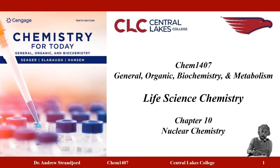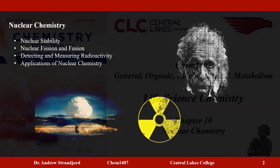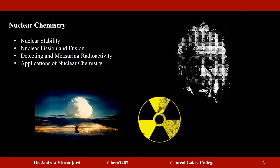This is the last chapter in general chemistry, covering nuclear chemistry. We'll start with nuclear stability, then discuss the two main nuclear reactions: fission and fusion. We'll also cover detecting and measuring radioactivity and some applications of nuclear chemistry, specifically medical applications.